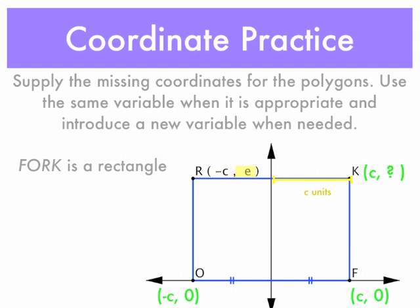Now let's look at the E coordinate of point R. The fact that the Y coordinate of R is E shows me that the rectangle is E units tall, and so therefore K is also E units tall.